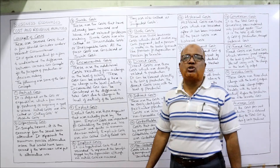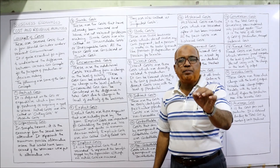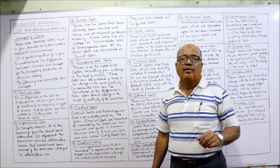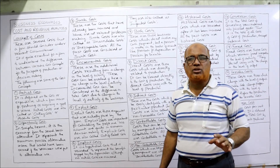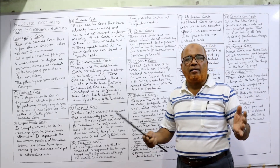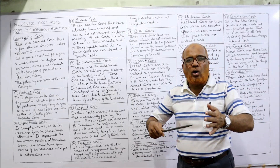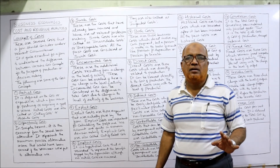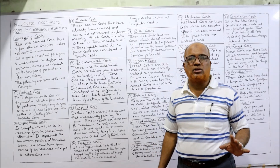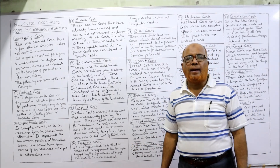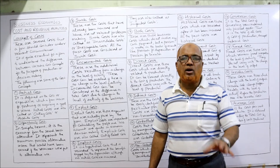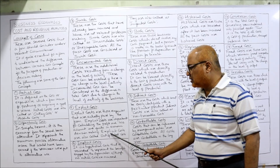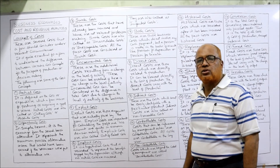Next comes explicit cost — the cost which is actually paid in cash. Examples include salary paid, rent paid, telephone bill paid, and electricity bill paid. All these are expenditures paid by the business, and they are called explicit cost. The other name of explicit cost is out-of-pocket cost, because it is the cost incurred in cash.